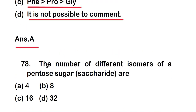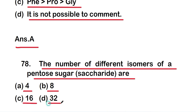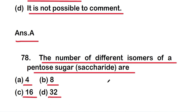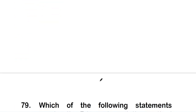Question 78: the number of different isomers of a pentose sugar (a saccharide) are — option A, 4; option B, 8; option C, 16; or option D, 32. The right answer is option B — the number of different isomers of a pentose sugar is 8.